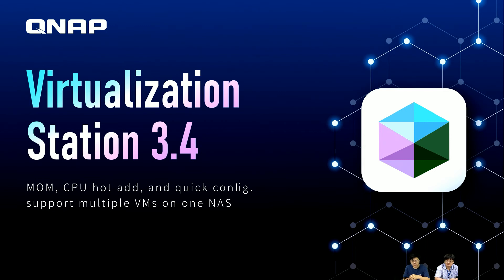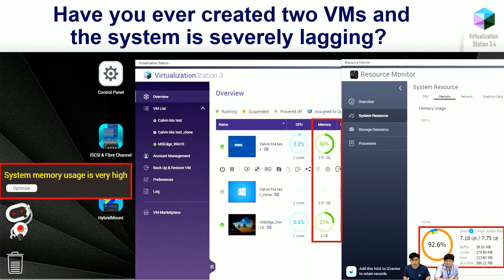The second new feature is that you can now manually adjust the CPU core numbers for each of your VMs. So those will be the two new things for the new version of the Virtualization Station. Kelvin will do the in-depth explanation, please.